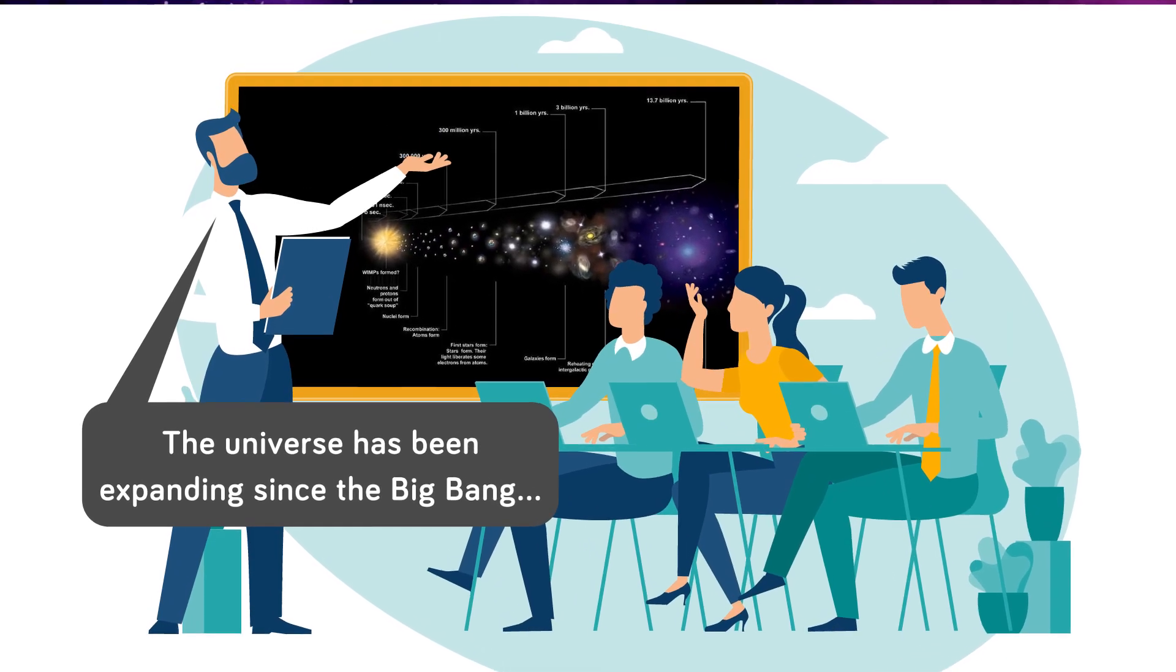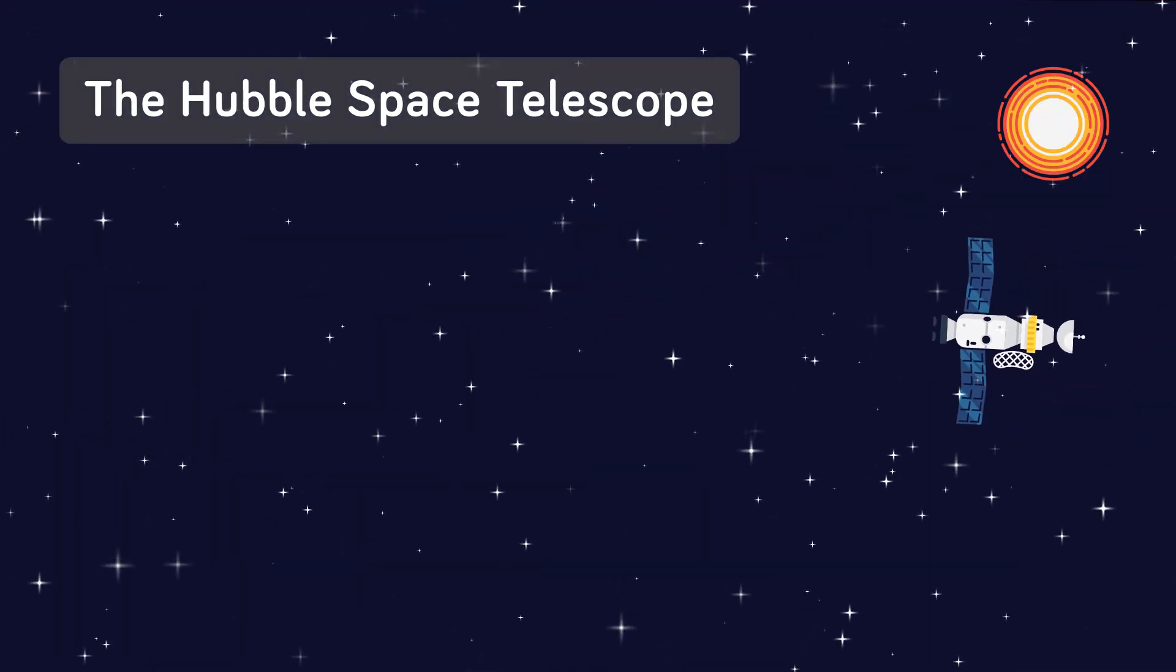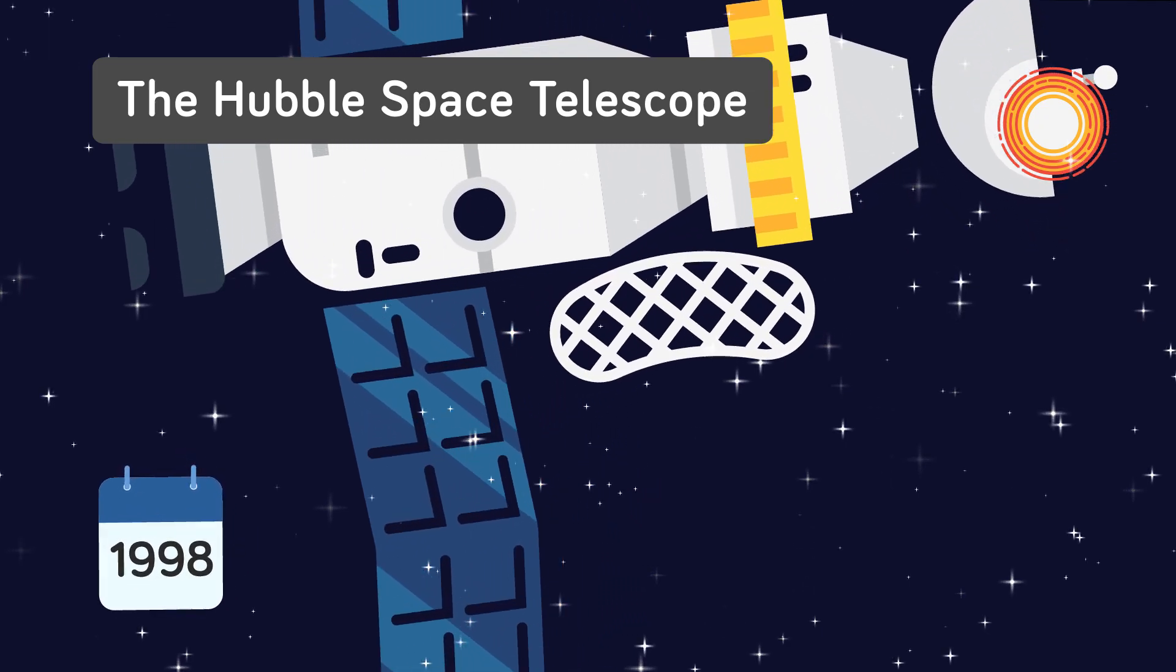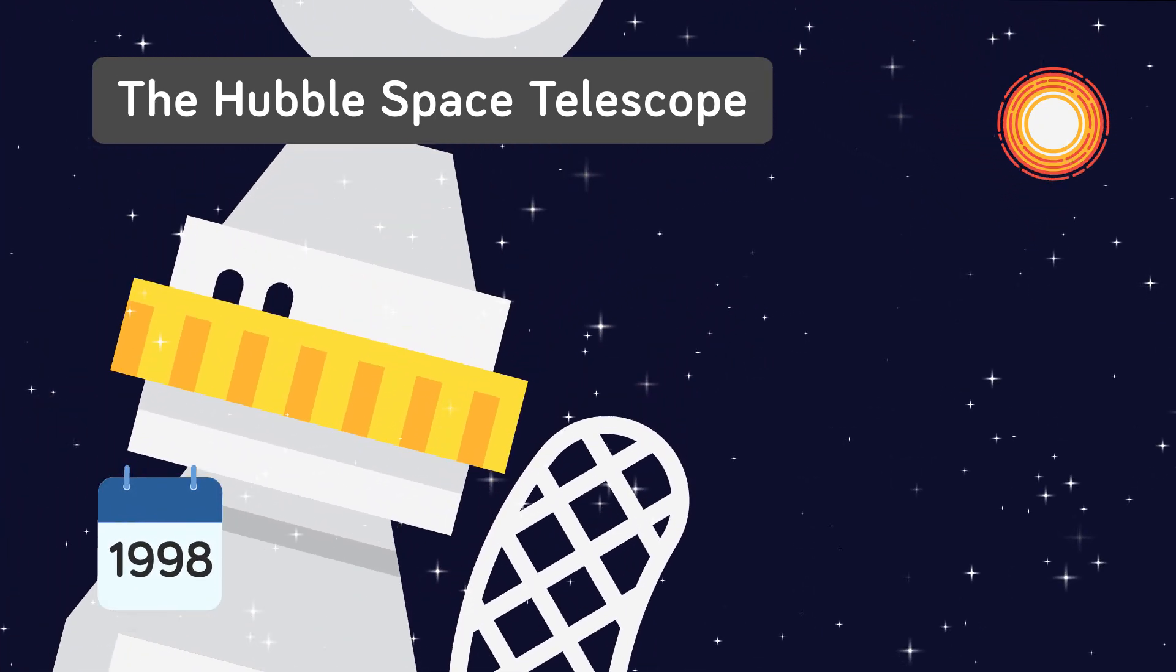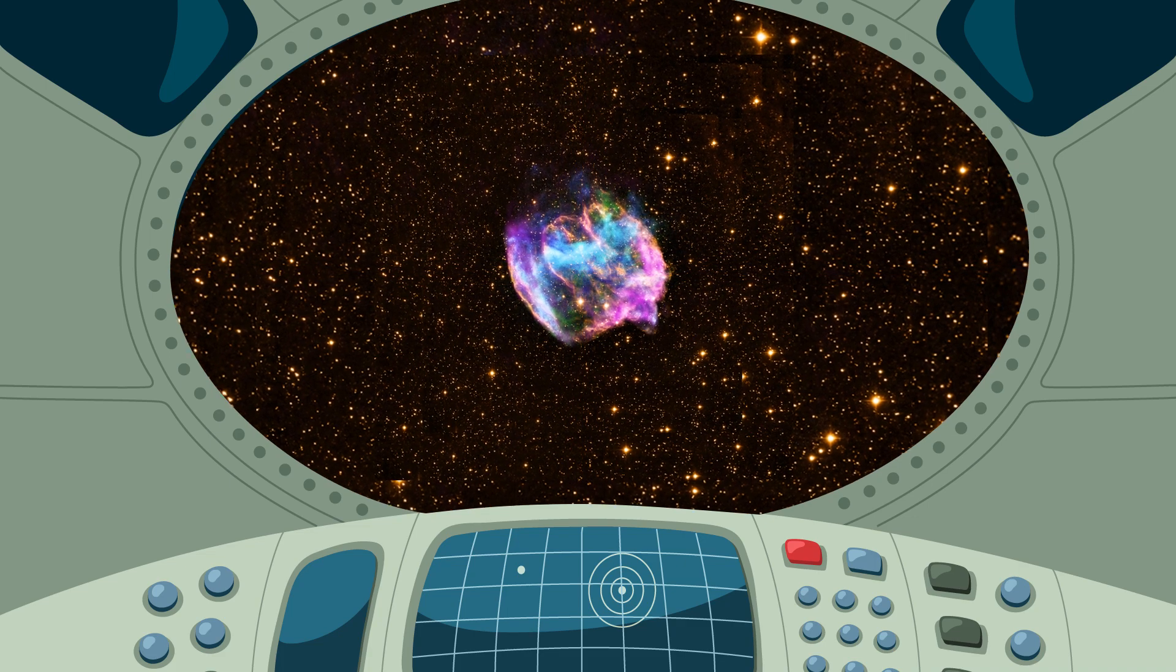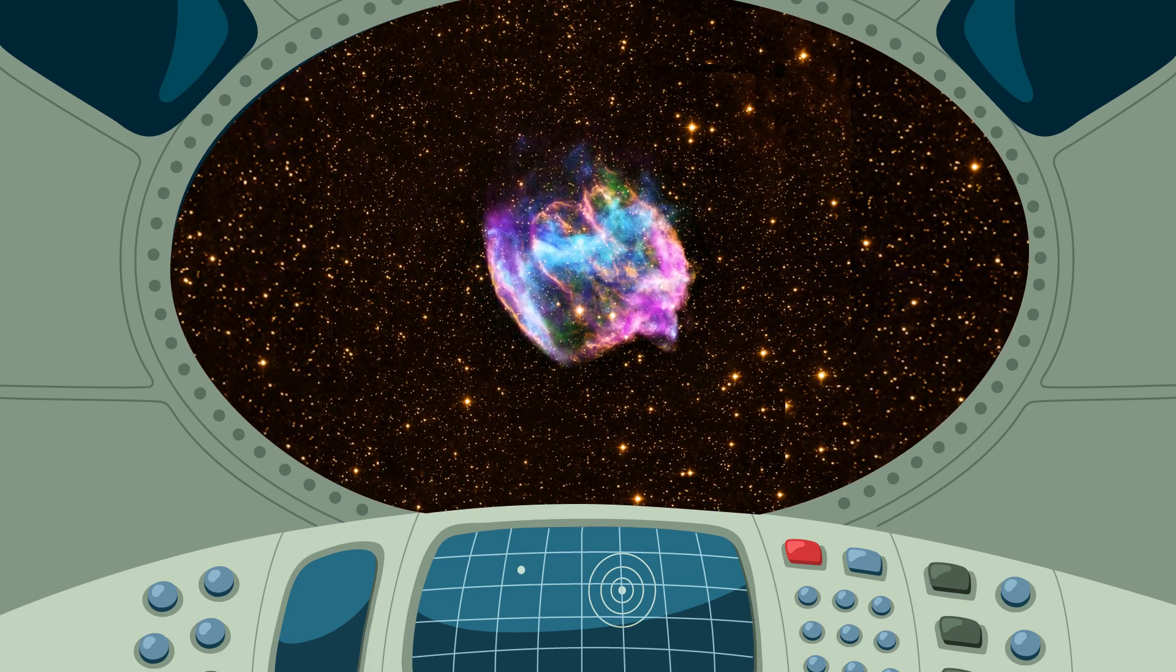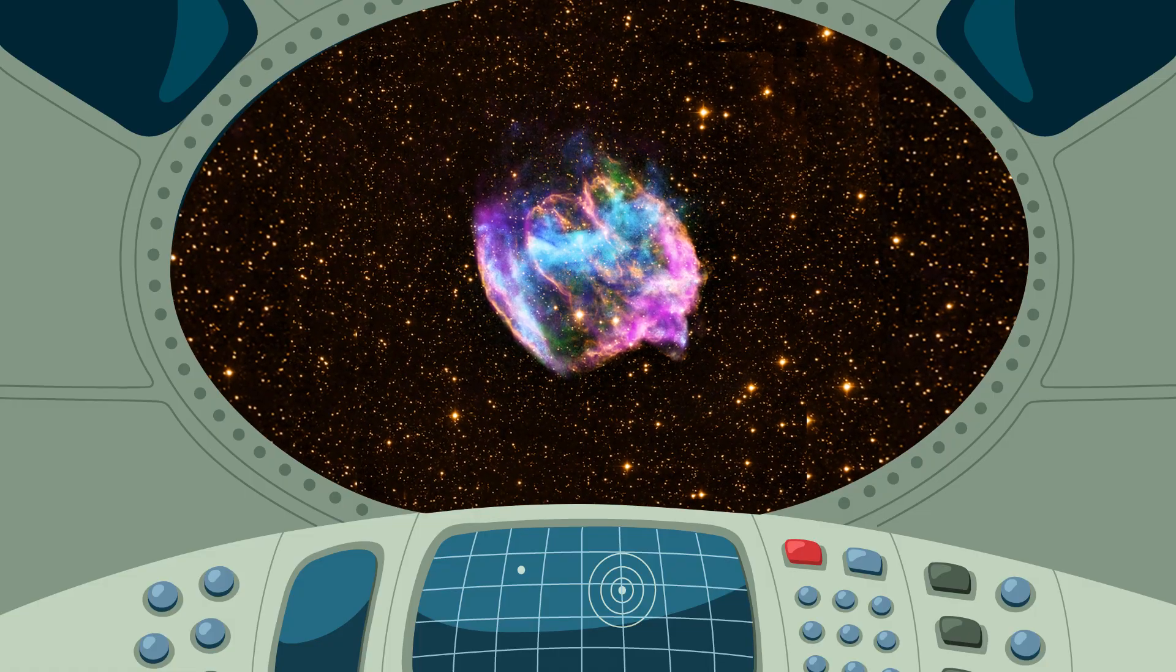We know that the universe has been expanding since the Big Bang, and for decades astronomers theorized that the rate of expansion was slowing over time due to the effects of gravity. However, all their theories went out the window in 1998 when the Hubble Space Telescope made a shocking discovery. By observing a very distant supernova, the Hubble proved that the universe had been expanding more slowly in the past than it was today- meaning that the expansion of space was actually speeding up, not slowing down.